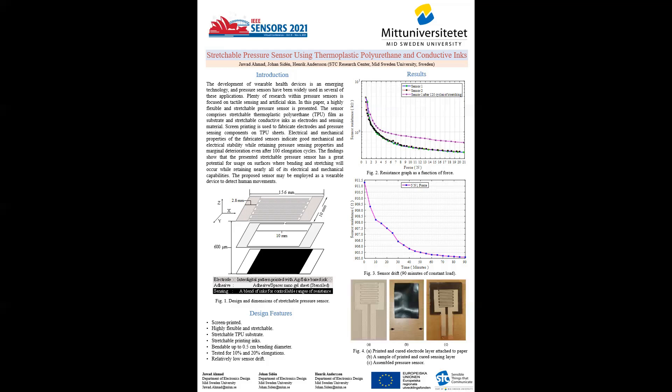Figure 4A shows the printed and thermally cured electrode layer while figure 4B shows the sensing layer. The assembly of the sensor is shown in figure 4C. To get ease in testing, a double sided copper tape is attached to the electrodes of the assembled pressure sensor.